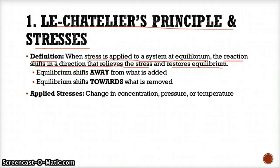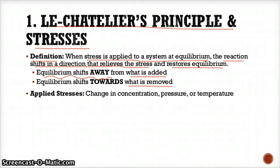Basically, when you apply stress, it's messing up the system's equilibrium or state of balance. So in order to restore that state of balance, the reaction will shift in a certain direction to get rid of that stress. Specifically, whenever a species is added, equilibrium will always shift away from what is added to consume it and push it back down to equilibrium levels. Whenever something is removed, equilibrium will shift towards what is removed to produce more of it and restore it back up to equilibrium levels.